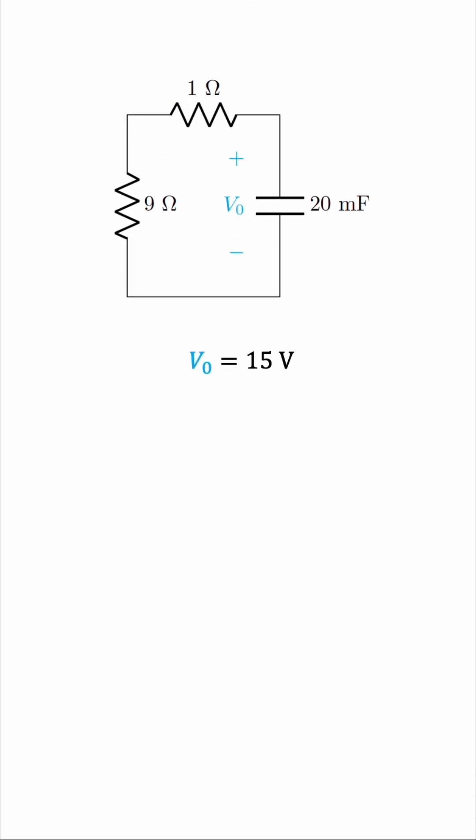Well, I recently made a video on the source-free RC circuit, and from that video we learned, and derived from scratch actually, that the voltage across the capacitor decays exponentially, starting from this V zero, and the rate of decay is determined by tau, the time constant of the circuit.